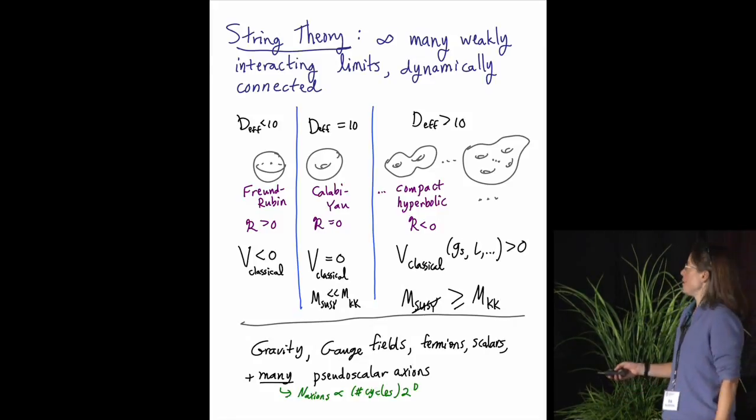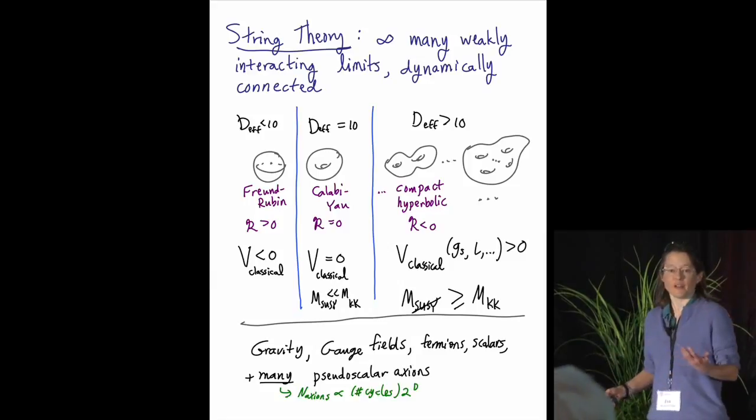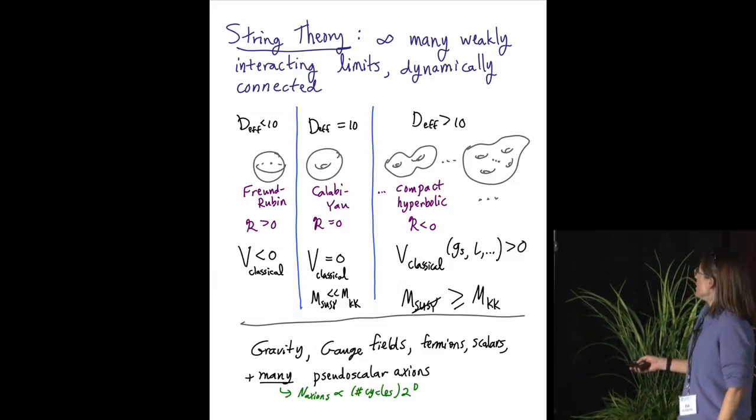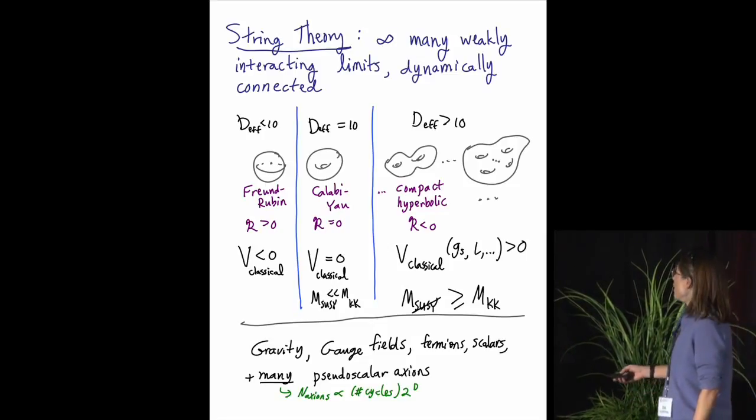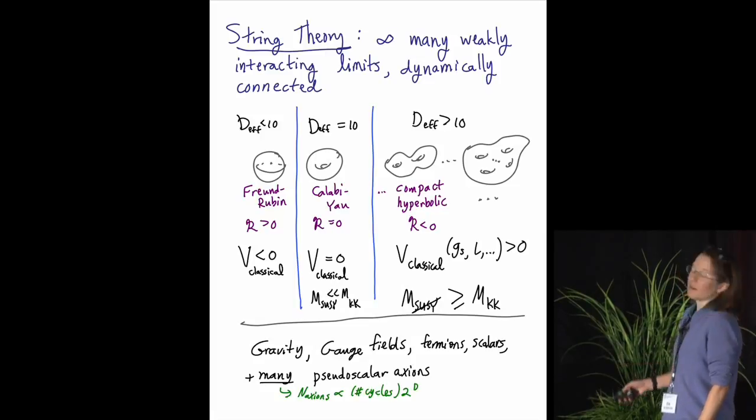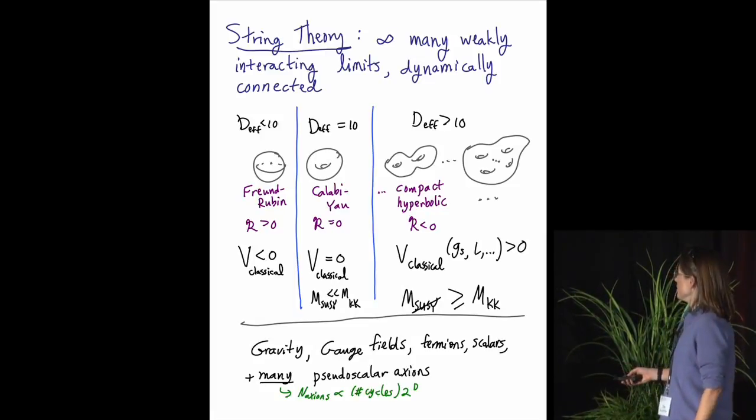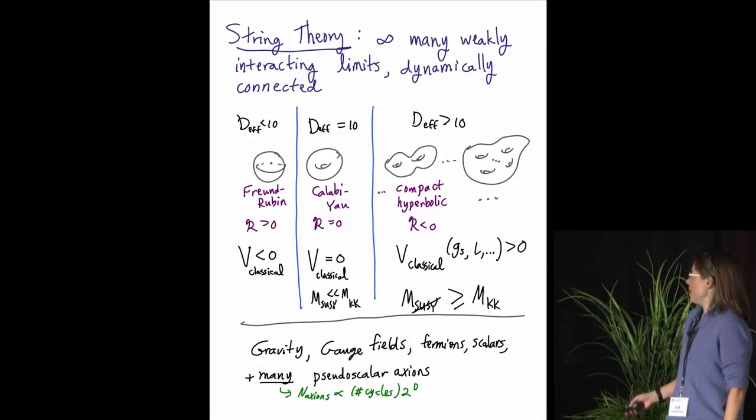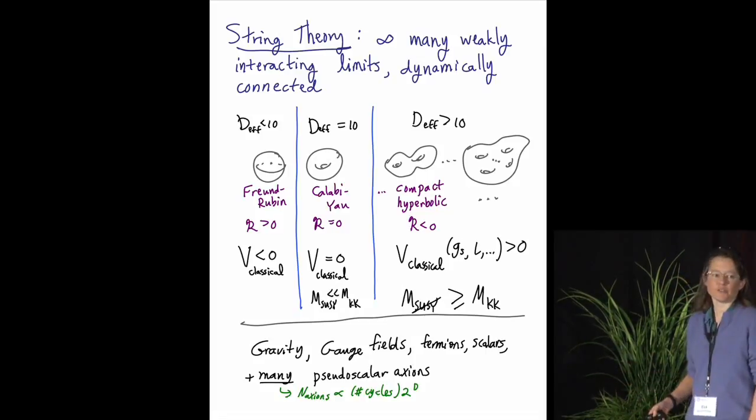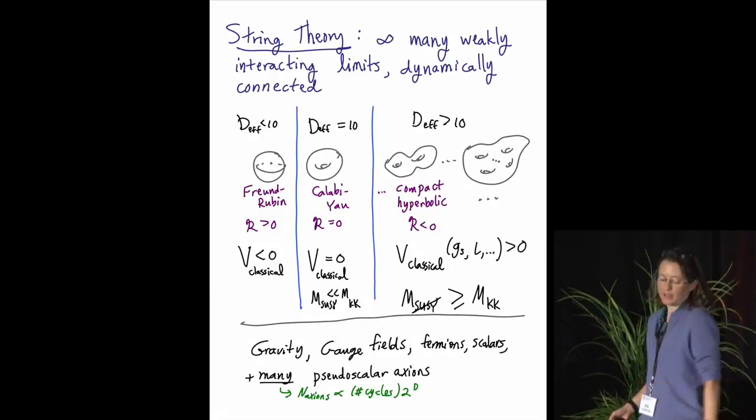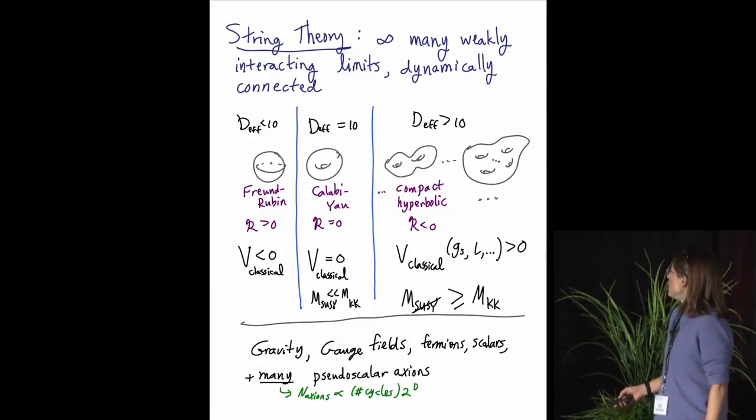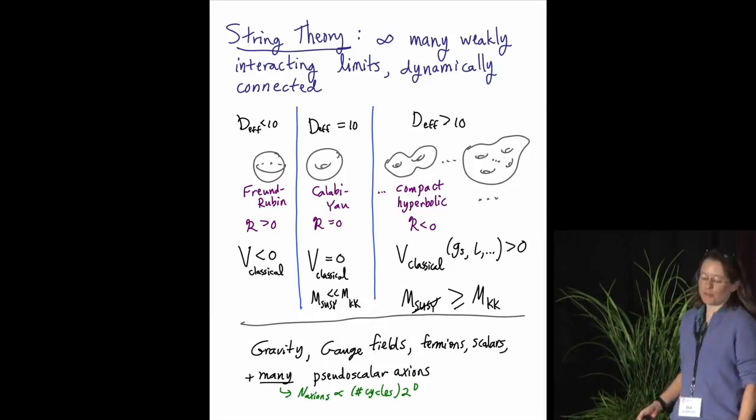But a lot of the phase space of the theory, and at face value essentially all of it, is in this other category with positive classical potential energy, supersymmetry broken at a higher scale, and many possibilities for the shape of the internal dimensions. These backgrounds all have the qualitative features of the real world that we know and love, gravity, gauge fields, matter fields like those that we find in particle physics. And in this generic setting, the spectrum is dominated by axions.